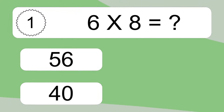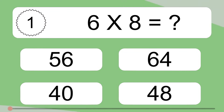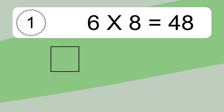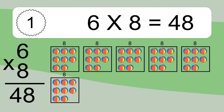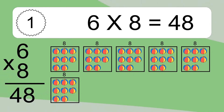6 times 8 equals what? 6 times 8 equals 48. We have 6 boxes, and each box has 8 colorful balls inside. If you count all the balls in all the boxes together, you will have 6 times 8 balls. This equals 48 balls.